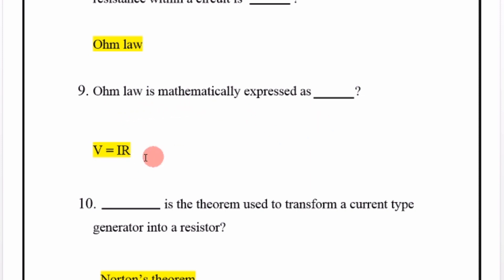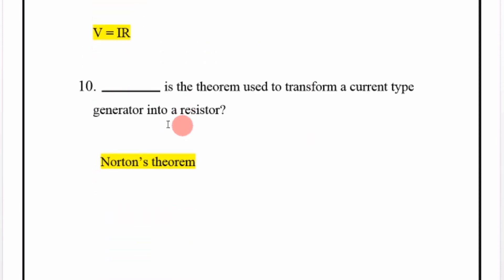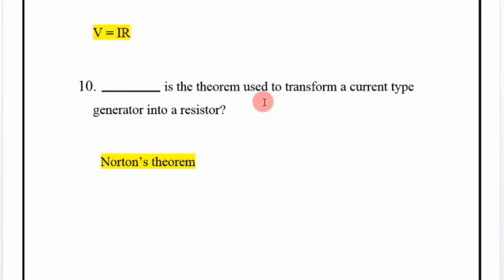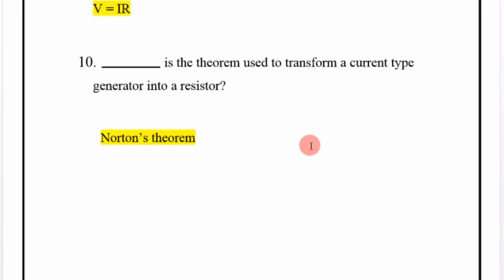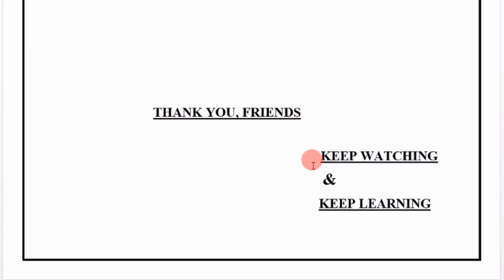Ohm's Law is mathematically expressed as V is equal to IR. Norton's theorem is the theorem used to transform a current type generator into a resistor. Thank you friends, keep watching and keep learning. Allah Hafiz.